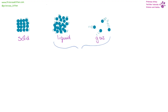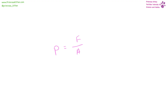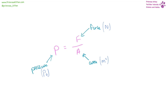A fluid can either be a liquid or a gas. Liquids are incompressible, whereas gases are compressible. Pressure equals force over area. The units for pressure are Pascals, force is in Newtons, and area is in metres squared. I've seen exam questions using Newtons per metre squared or Newtons per centimetre squared — if they use that format in the exam, give your answer in the same format. Pay attention because they could be sneaky here.